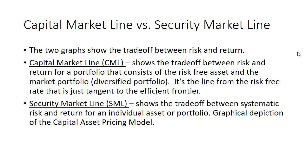I want to do a little comparison of the capital market line and the security market line. Students sometimes get confused over these two because they look fairly similar and have fairly similar names. Both of these graphs show the trade-off between risk and return. The capital market line shows the trade-off between risk and return for a portfolio that consists of the risk-free asset and the market portfolio, which is a diversified portfolio that theoretically consists of all risky assets.